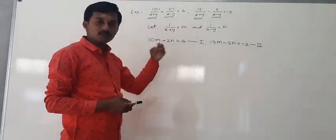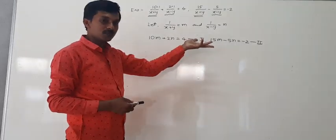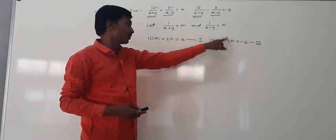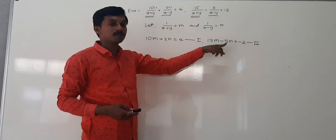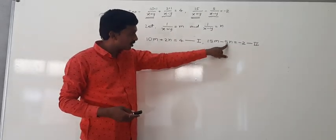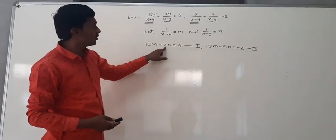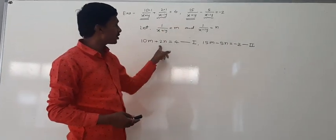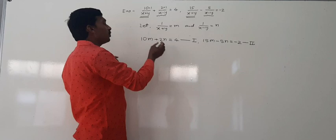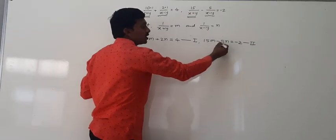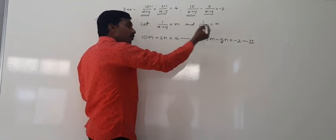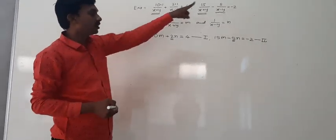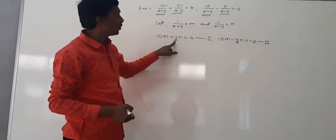We can solve this using any method — substitution, elimination, or the determinant method. Here we use the elimination method. The coefficients of n in both equations are different — in equation 1 the coefficient is 2, and in equation 2 it is 5. To make them equal, multiply equation 1 by 5 and equation 2 by 2.